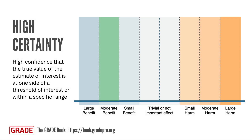GRADE categorizes the certainty of the evidence as high, moderate, low, or very low. High certainty means that we have high confidence that the true value of the estimate of interest is at one side of a threshold of interest or within a specific range. For example, if the evidence suggests that an intervention has a moderate benefit, high certainty means that the true effect is indeed a moderate benefit.